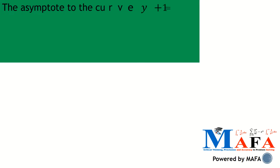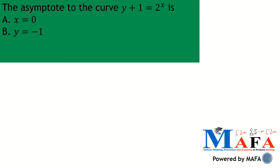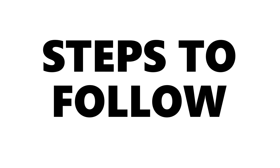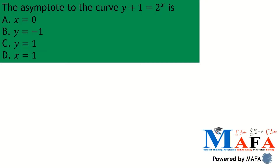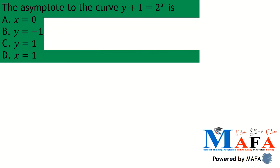Here's the equation: the asymptote to the curve y plus one equals two to the power x. The options are: option A, x equals zero; option B, y equals negative one; option C, y equals one; and option D, x equals one.